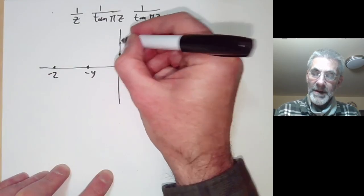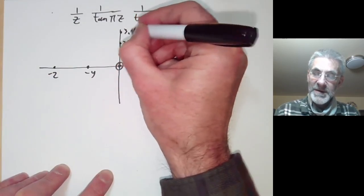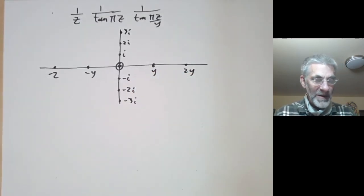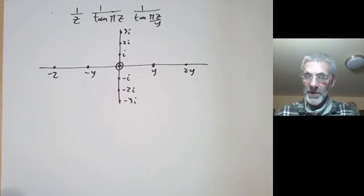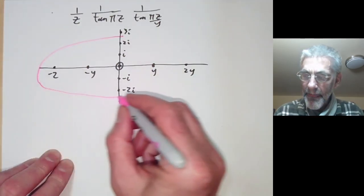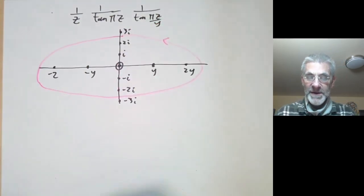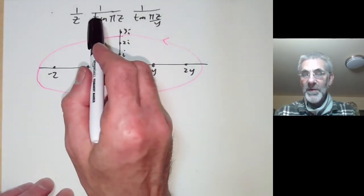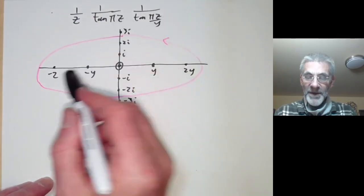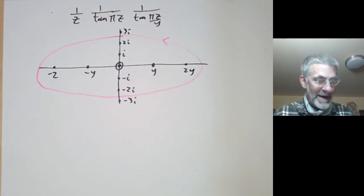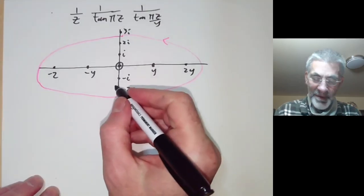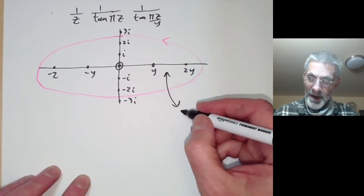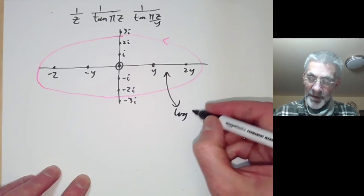This function has a pole of order three at zero. It also has poles at y, 2y, −y, −2y on the real axis, and poles at i, 2i, 3i, and so on on the imaginary axis. We take a large contour enclosing many of these poles, and examine the residues. Summing the residues on the real axis corresponds to log η(iy).